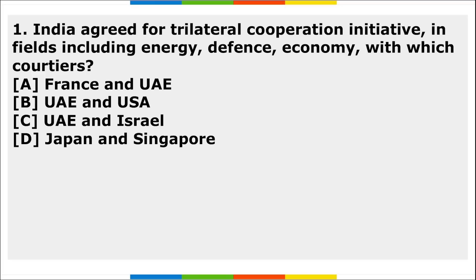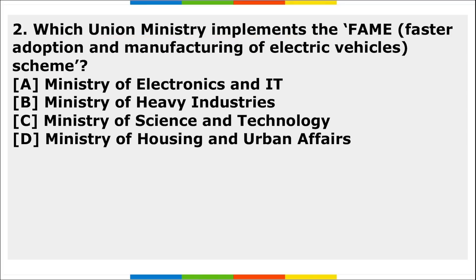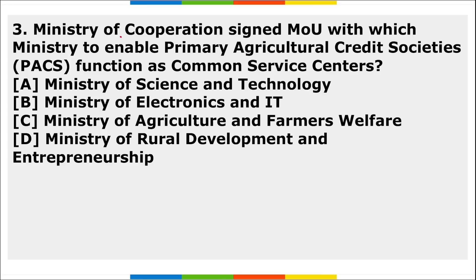Now it's time for your homework. First question: India agreed for trilateral cooperation initiative in the fields including energy, defense, and economy — with which countries? Second: which union ministry implements FAME — Faster Adoption and Manufacturing of Electric Vehicle schemes? Third: which ministry of corporations signed an MOU with which ministry to enable primary agriculture credit societies to function as a common service center?